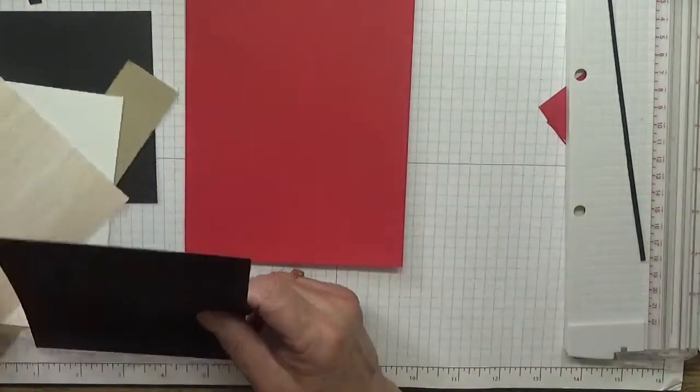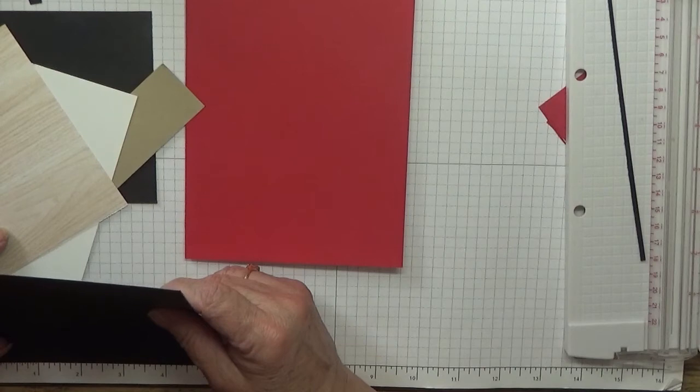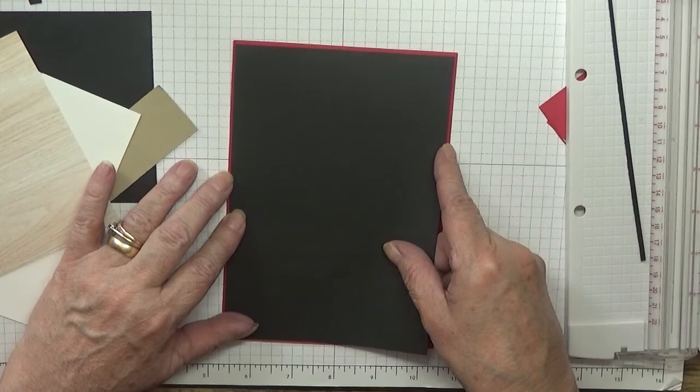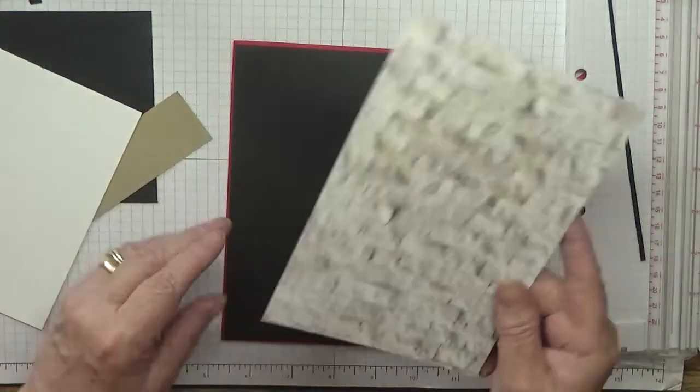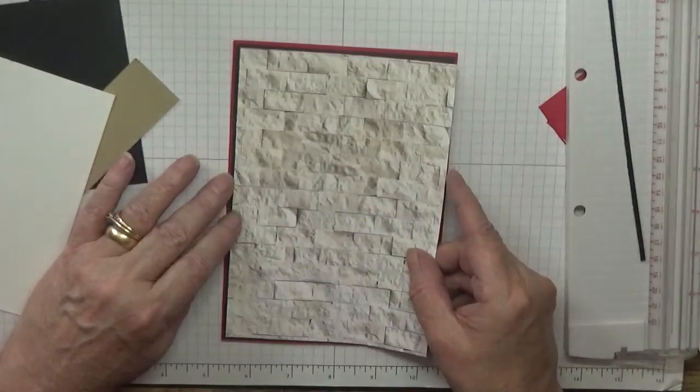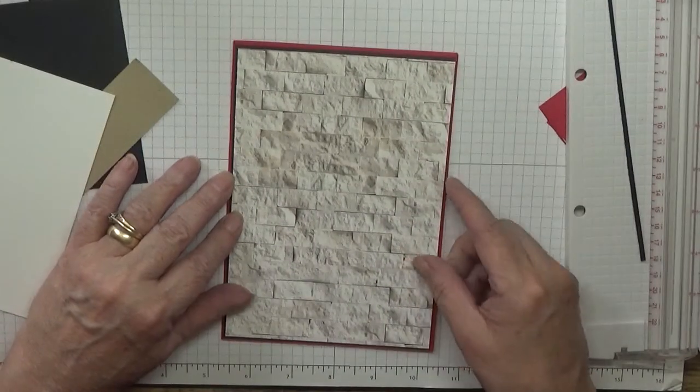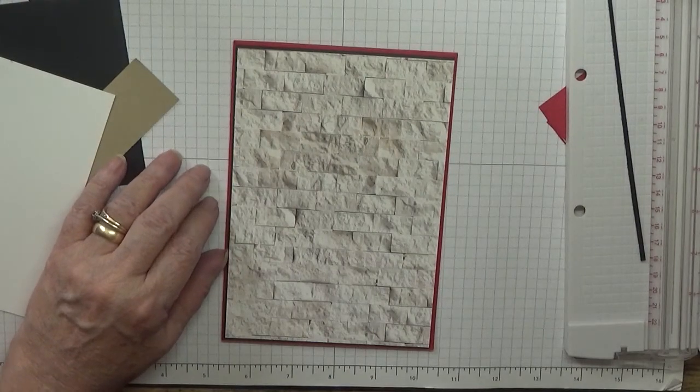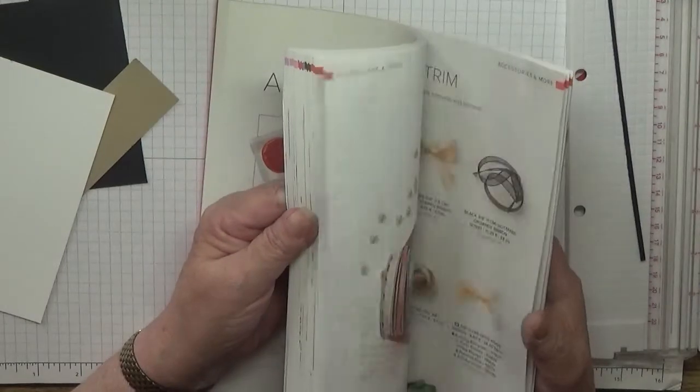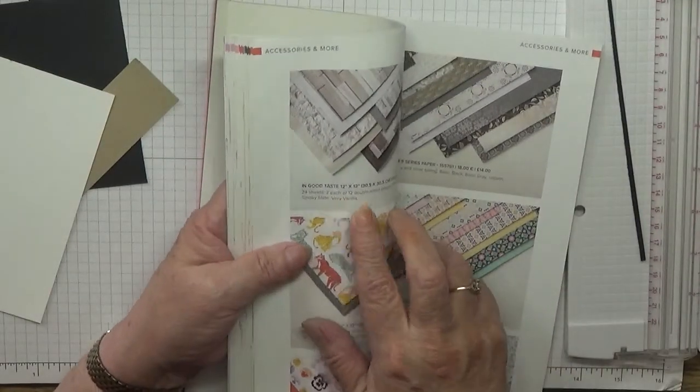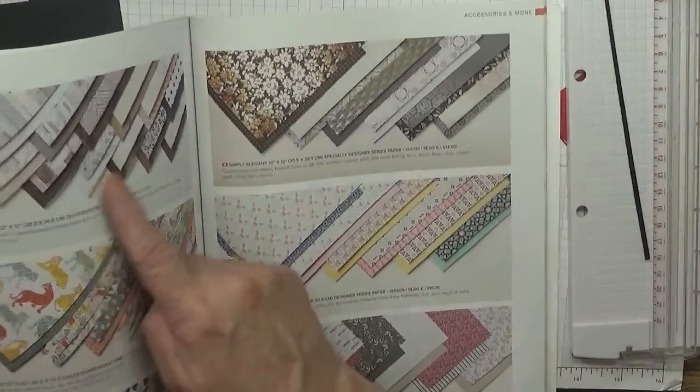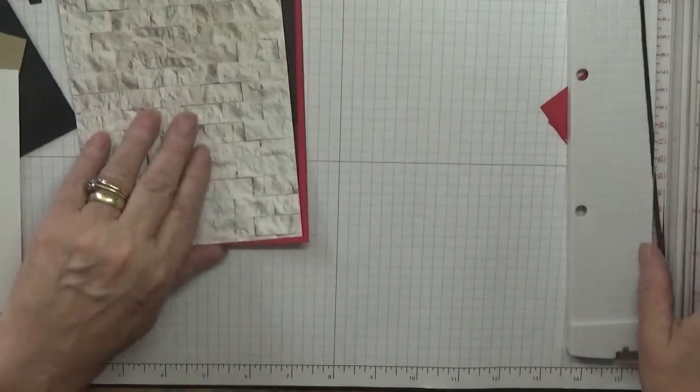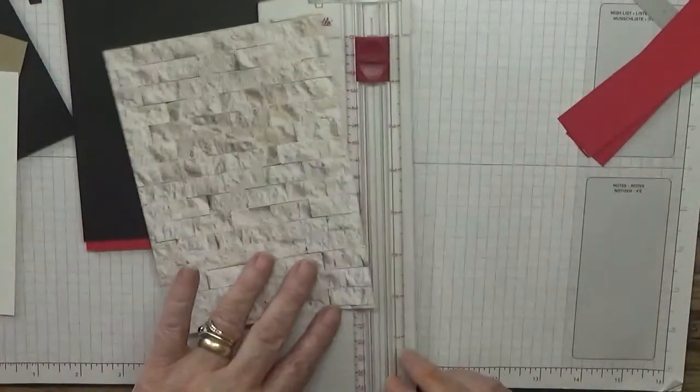It should measure 4 and 7/8 by 6 and 7/8. That means this DSP piece might be too wide. I've got a piece of the In Good Taste DSP, which was carried over from last year's catalogue.